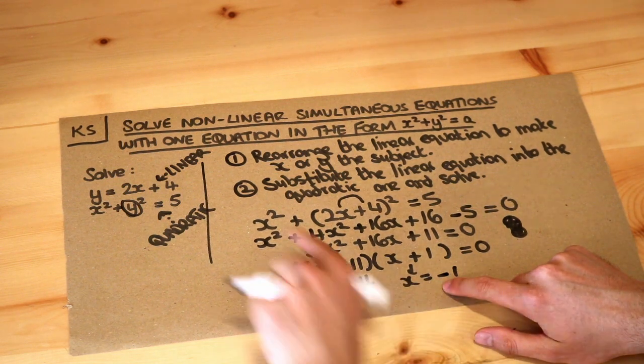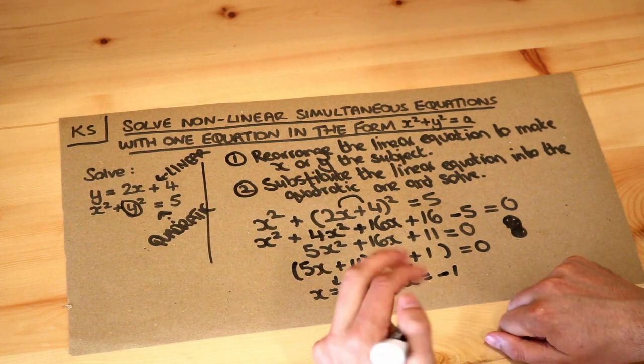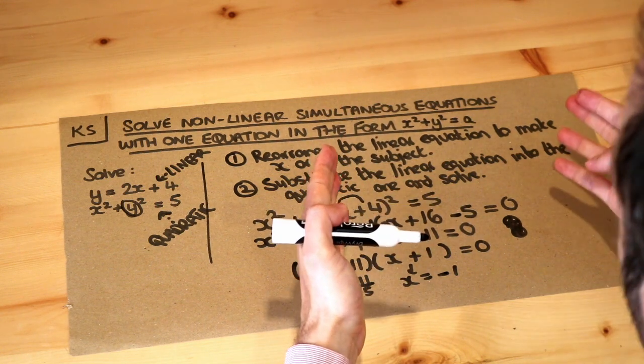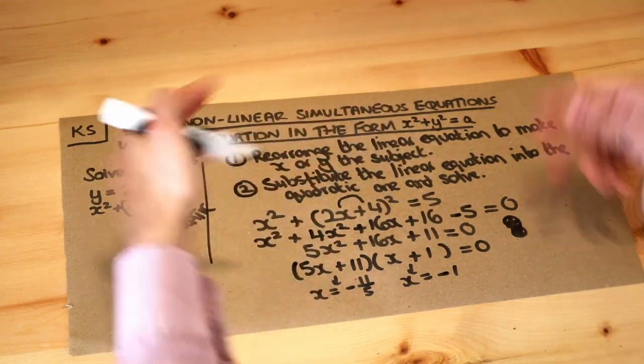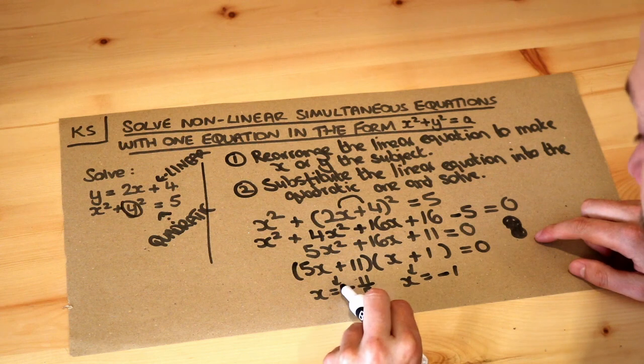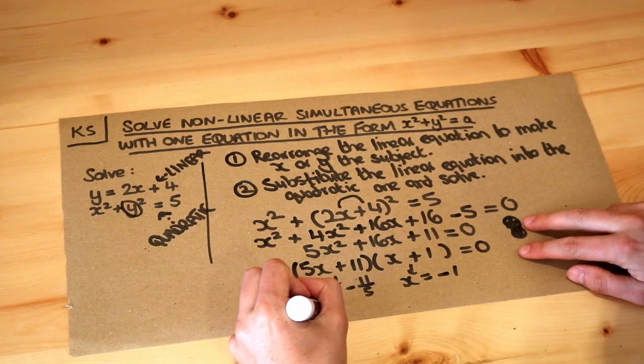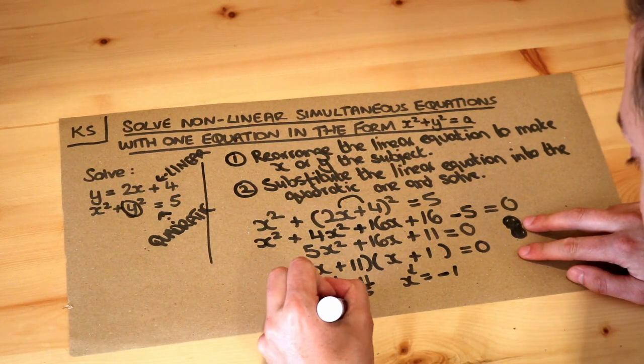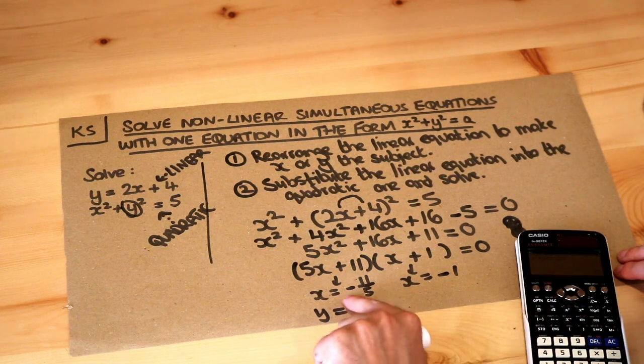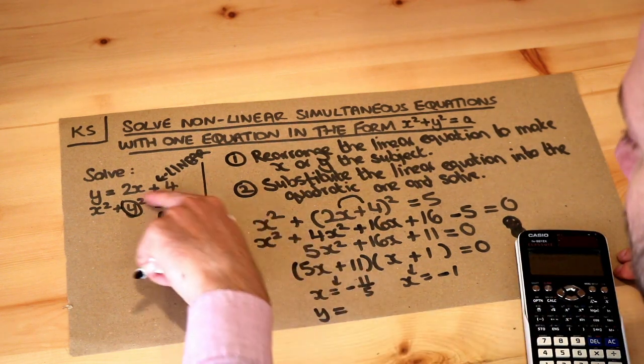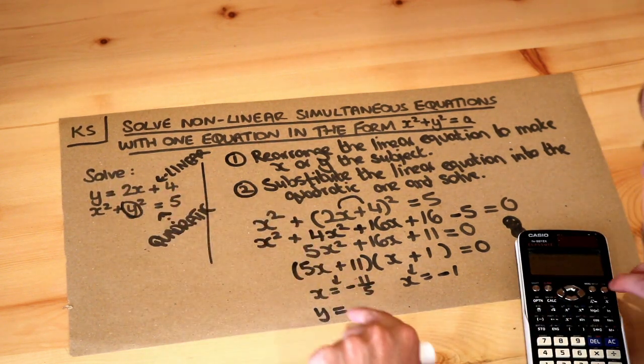Now we found the values of x which work in the equation, but remember I said that we have an x and a y value that if we substitute them in satisfy both equations. So for each of these values of x I need to find a value of y, just like with linear simultaneous equations. I typically sub the value of x into the easier one, the linear equation.